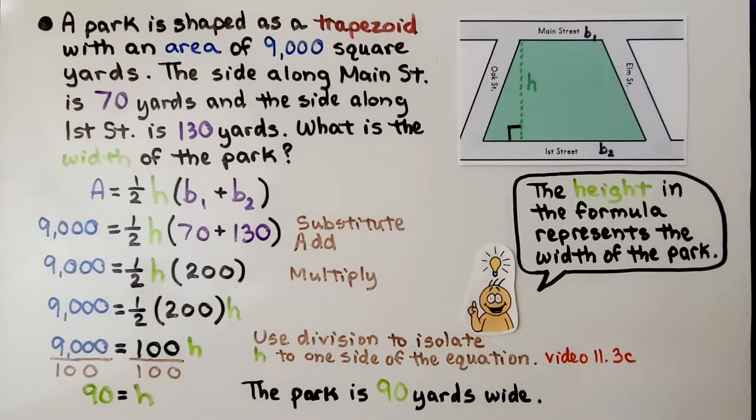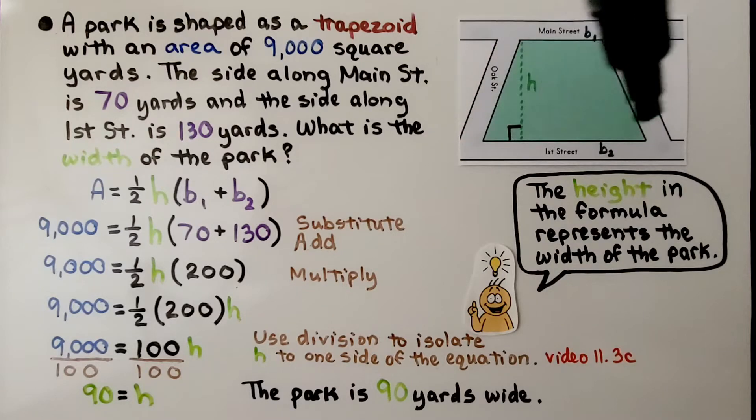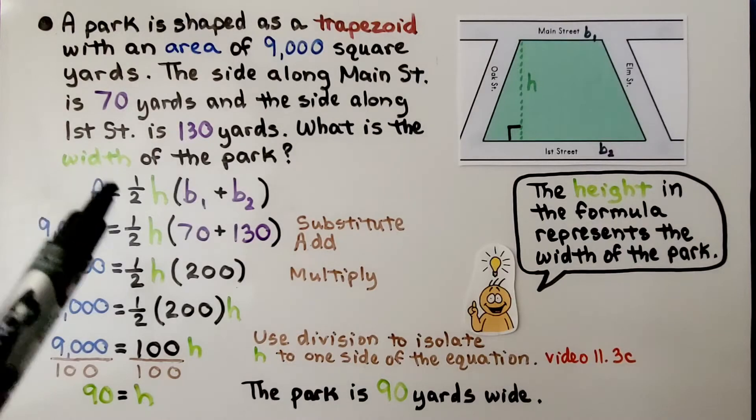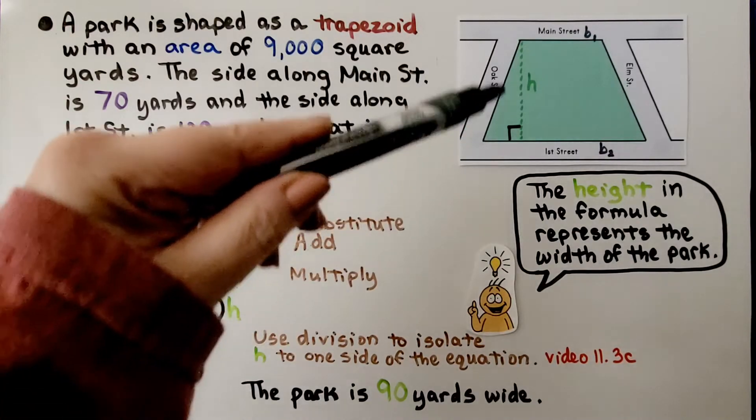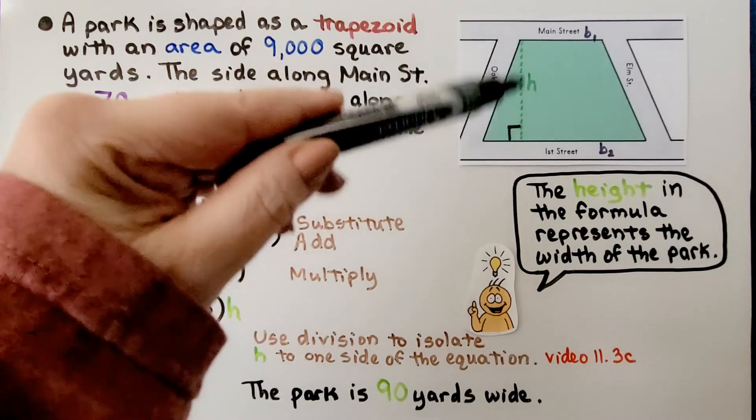A park is shaped as a trapezoid with an area of 9,000 square yards. The side along Main Street, that would be up here, is 70 yards, and the side along 1st Street is 130 yards. What is the width of the park? This is going to be our height, the width of the park.